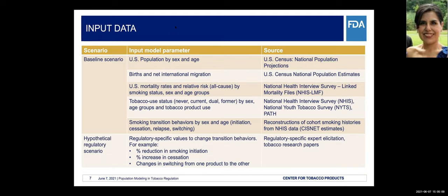We also need to populate prevalence for different products — tobacco use status for never, current, dual, and former users — by sex, age groups, and tobacco product, obtained from nationally representative surveys including NHIS, the National Youth Tobacco Survey, YTS, and PATH. Additionally, we need smoking transition behaviors by sex and age — initiation, cessation, relapse, and switching — using reconstructions of cohort smoking histories from NHIS data, specifically the CISNET estimates that are publicly available.